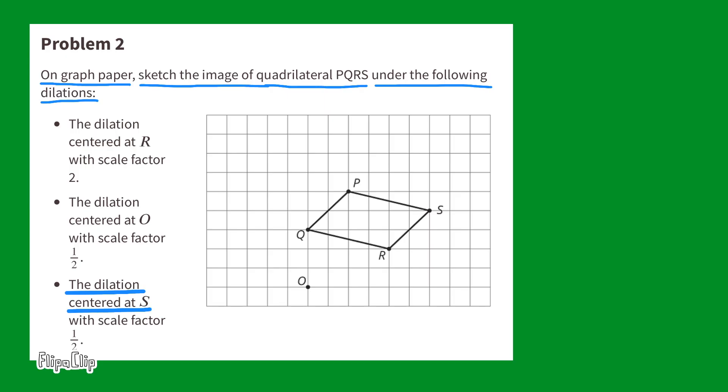The dilation centered at S with a scale factor of one half. First, I need to locate point S because it's the center of the new dilation. Then, I need to place new points for the dilation halfway between point S and each of the other points. I'll start with point R, then point Q, then point P. Now, I can connect the points so that we can have a look at the new dilation with a scale factor of one half.